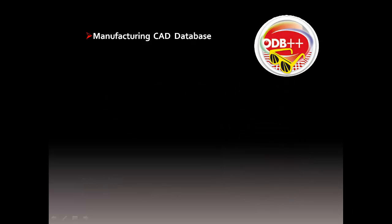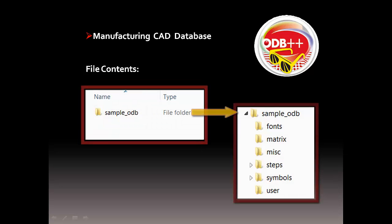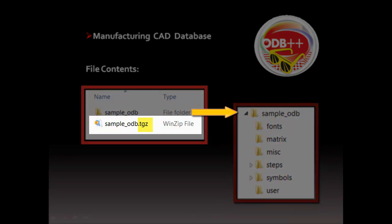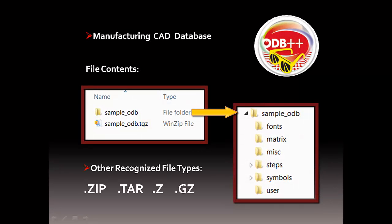An ODB++ is actually a manufacturing CAD database, similar to your Expedition database using a directory hierarchy. The ODB++ is often compressed into a single file for sharing, with the TGZ file type being the most popular and native format to the tool. Other compressed file types are recognized, such as zip, tar, z, and gz.